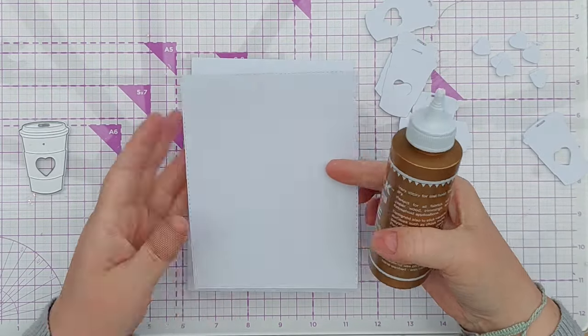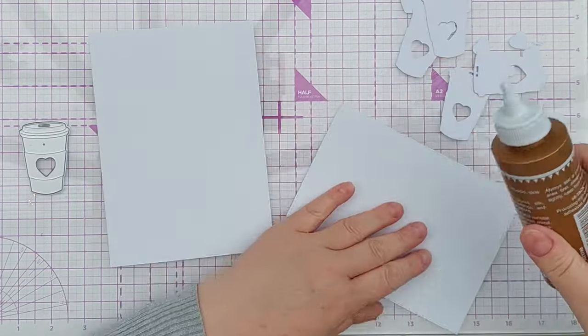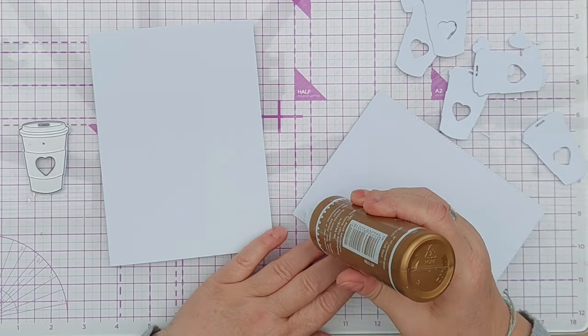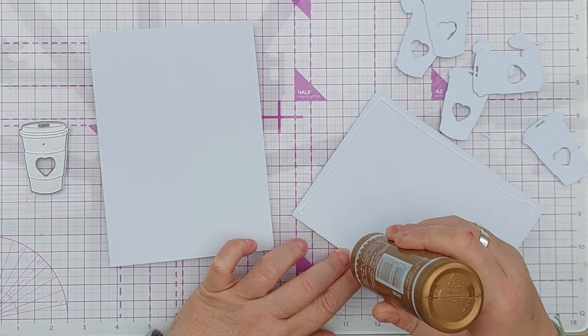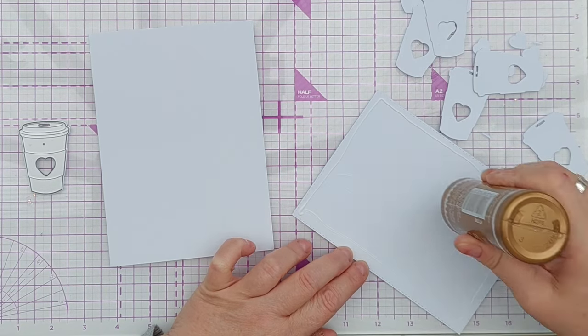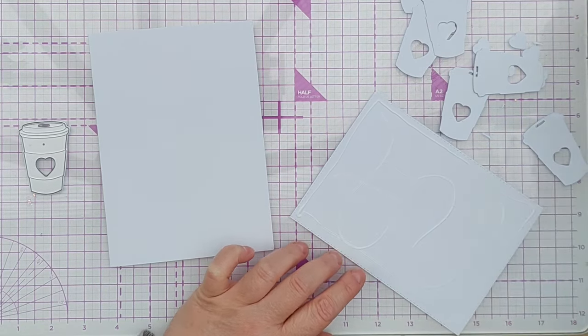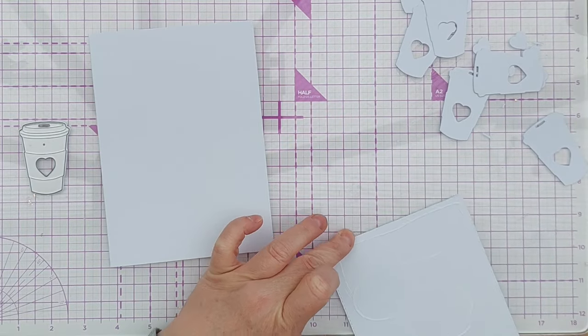So I've got this stitched rectangle smooth white cardstock panel and I shall use a teeny tiny bit of glue to reduce the risk of bubbling to add it to the front of my card.